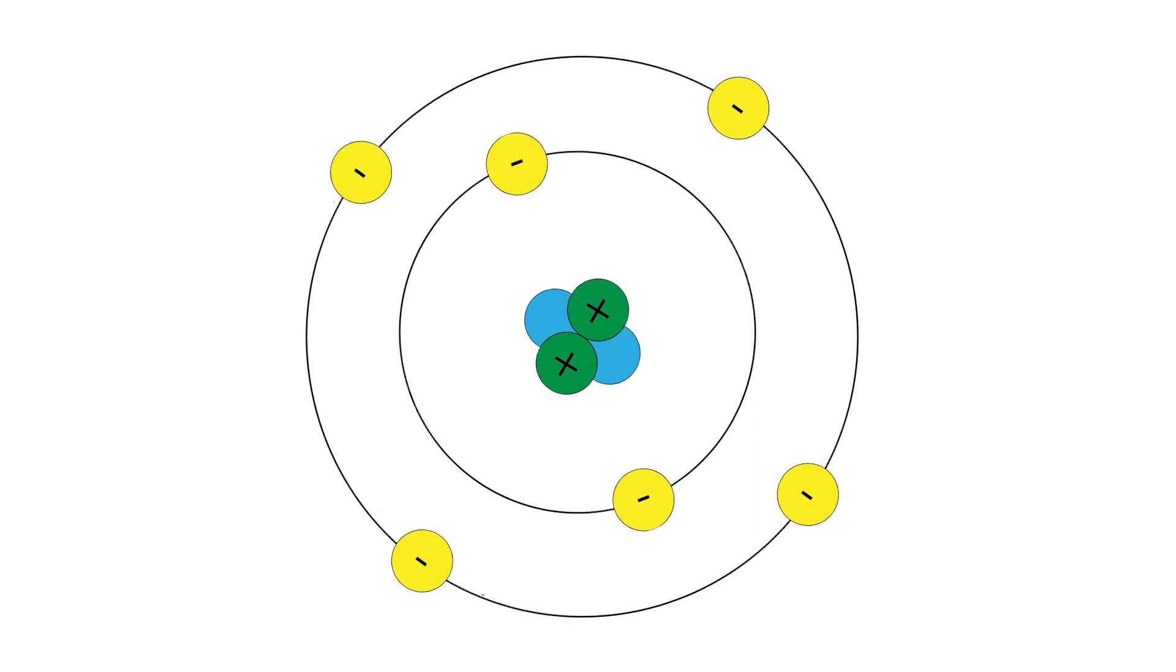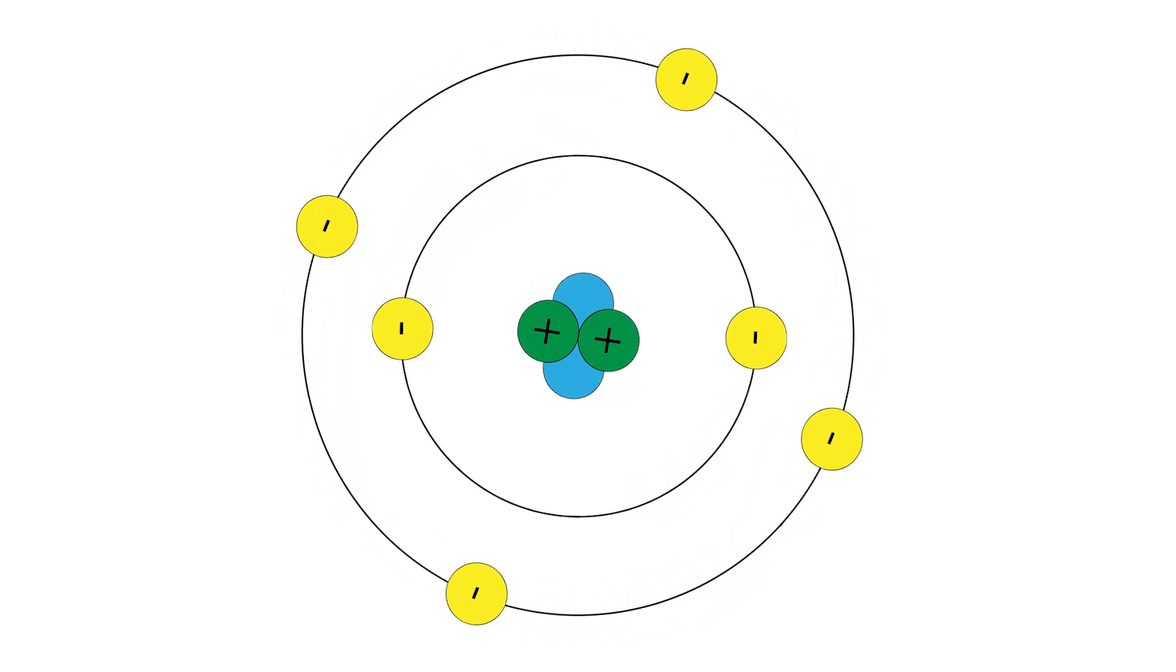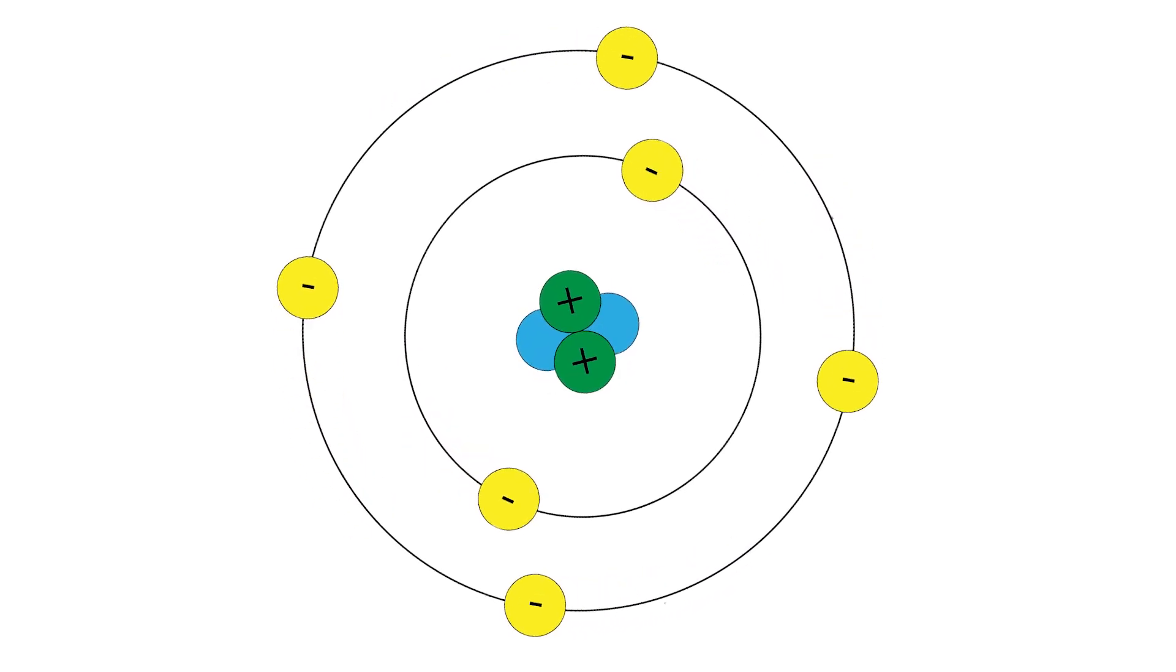Electrons in an atom live outside the core of the atom, in valence shells. Each valence shell can hold a maximum number of electrons before they must occupy the next valence shell.